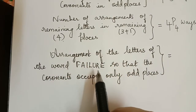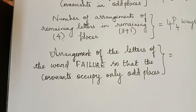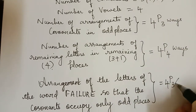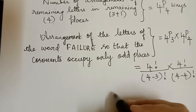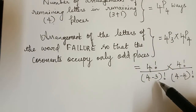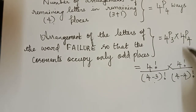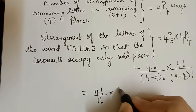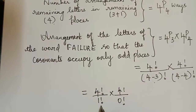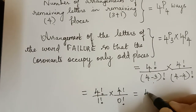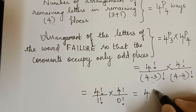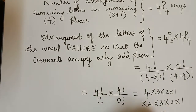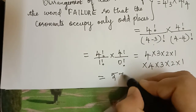Finally, the total number of arrangements of the letters of the word FAILURE so that the consonants may occupy only odd places is equal to 4P3 multiplied by 4P4. That is 4!/（4−3)! × 4!/(4−4)! = 4!/1! × 4!/0! = 4! × 4! = (4×3×2×1) × (4×3×2×1) = 576 ways.